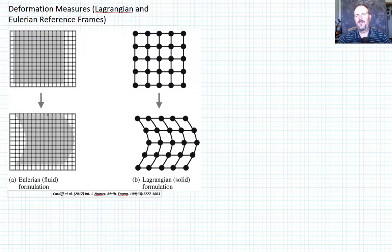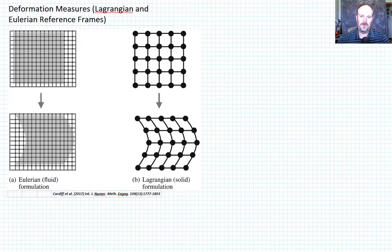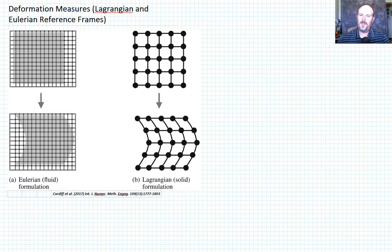Now that we've gone through a brief review of vectors and tensors, let's start using those to describe deformation in a material. Before we can do that, we need to talk about what reference frame we want to use. In this figure, on the left-hand side you'll see what's referred to as an Eulerian reference frame, and on the right-hand side is a Lagrangian reference frame. Both represent the same deformation, but we're going to see what they are looking at in each reference frame and how they differ.